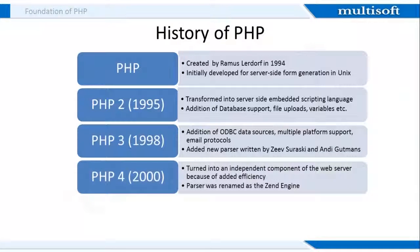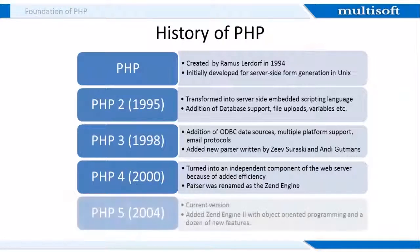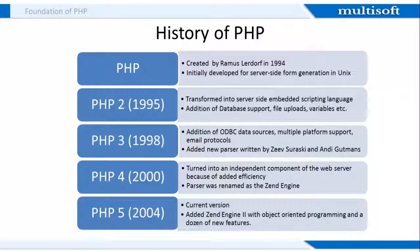In 2000, PHP 4 turned into an independent component of the web server because of added efficiency, and the parser was renamed as ZendEngine. PHP 5 is the current version with object-oriented programming and a dozen new features added to ZendEngine too.